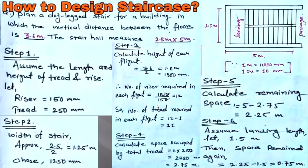As this staircase is a means of vertical transportation in the building from floor to floor, that is why we calculate the height this way. Step 4: Calculate the space occupied by the total treads. Total tread space equals 11 multiplied by 250, which equals 2750 mm, or 2.75 meters.